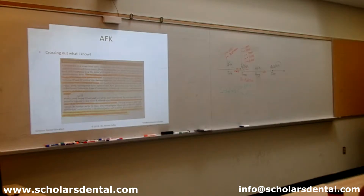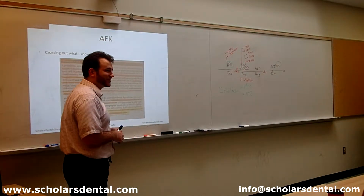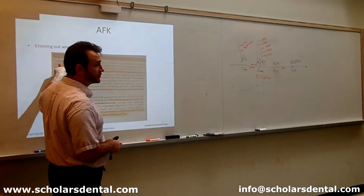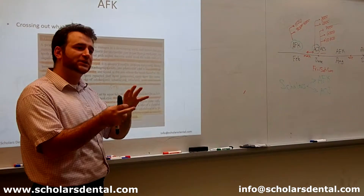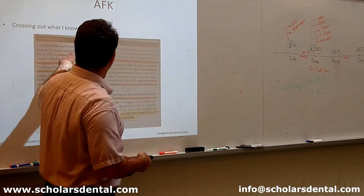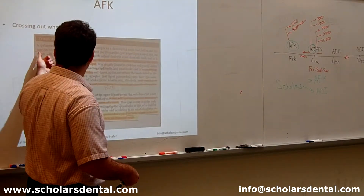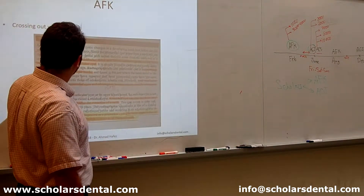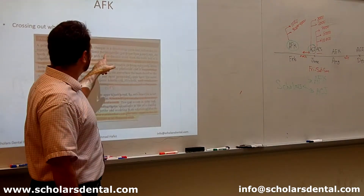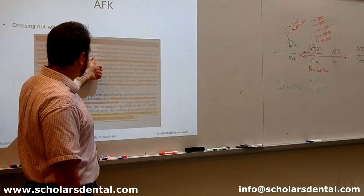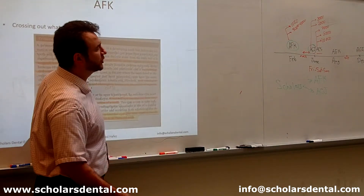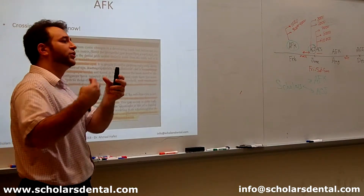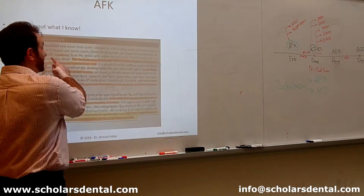This is an example of one of my cards when I was studying, to show you how serious I was about crossing things out. A primordial cyst — this became common knowledge for me. It's a cyst that develops instead of the tooth; it replaces the tooth. It arises from cystic changes in the developing tooth bud before the formation of the enamel and dentine — I kept that sentence. Since the primordial cyst arises from the tooth bud, the tooth will be missing. I crossed out the rest because I already know that if it's a supernumerary tooth that became a primordial cyst, there's not going to be a missing tooth — it just makes sense, so I'm not going to read it anymore.